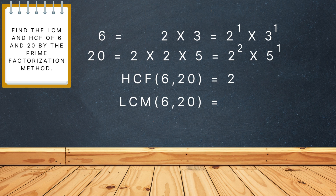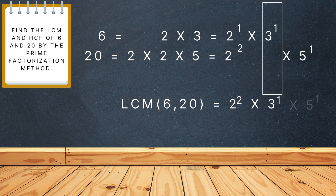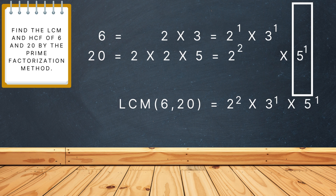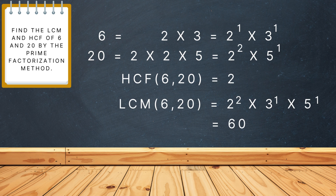Now, LCM is the product of the greatest power of each prime factor. So it would be 2 raised to the power 2 into 3 raised to the power 1 into 5 raised to the power 1, which is equal to 60. Thus, HCF of 6 and 20 is 2 and LCM is 60. Easy, right?